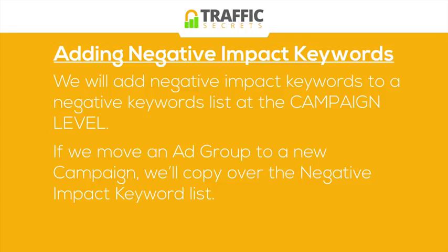If we move an ad group to a new campaign, which I'll talk about later in the module, we simply copy over the negative impact keyword list we've built to that other campaign. As we isolate certain ad groups into other campaigns, we copy over the list of words we never want ads to show for across any of these ad groups.